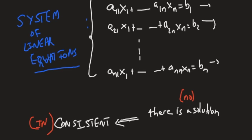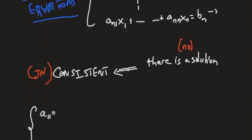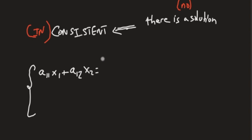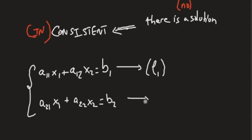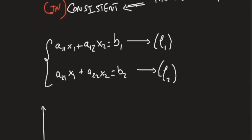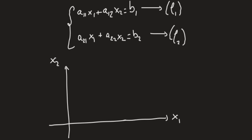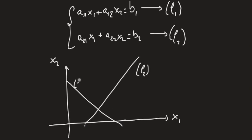Geometrically, solving a system of linear equations in 2, 3, or n unknowns is equivalent to determining whether a family of lines or hyperplanes has a common point of intersection. So in 2D, if I'm solving a 2-by-2 system, I'm in the x1-x2 plane and I plot line l1 and line l2. The solution is the intersection point. A case where there is no solution occurs when l1 and l2 are parallel and do not intersect.